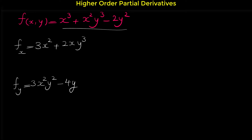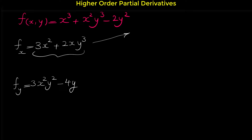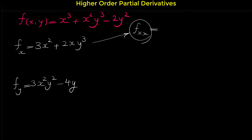These are the first partial derivatives of this function. Now we can find the second partial derivatives. If we take the derivative of f sub x again with respect to x, or with respect to y, those are the second partial derivatives of f. So f sub xx means that we want to take the derivative of this original function twice with respect to x.